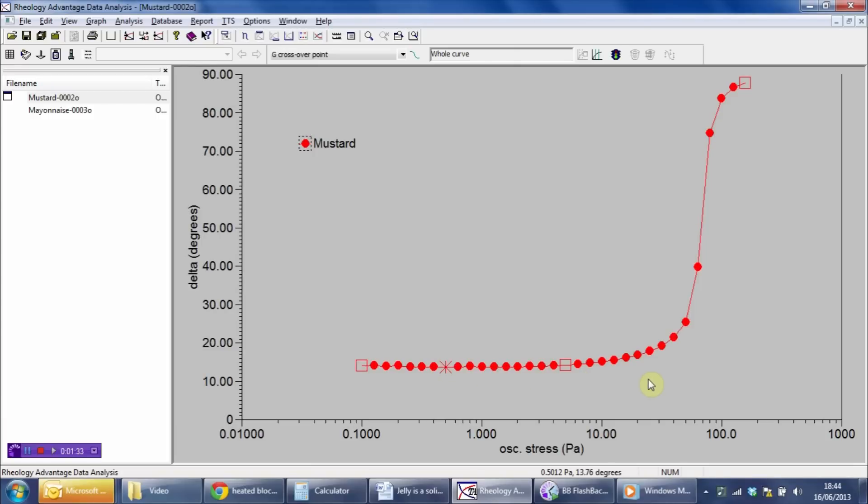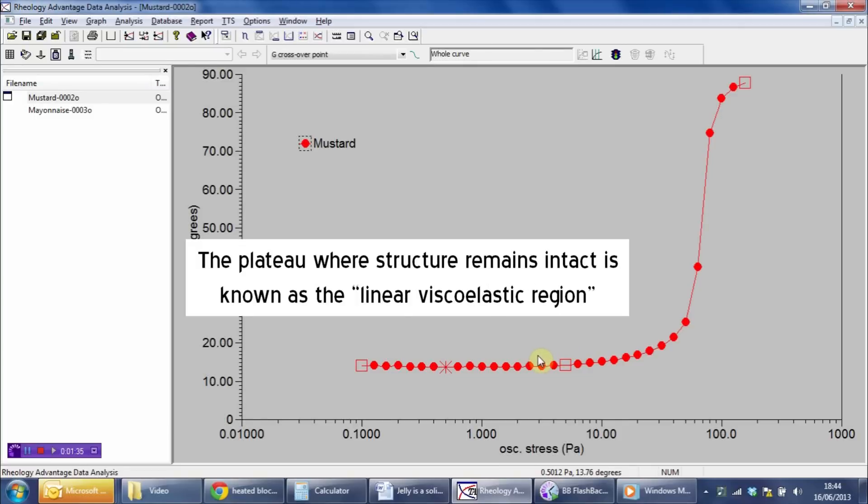This tells us that the mustard has an intact elastic structure at those low stresses, but as the stress rises, we can see the ongoing yield. The structure breaks up, and the phase angle heads up towards 90 degrees.